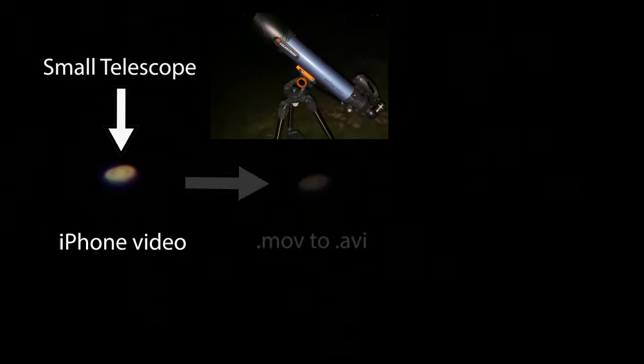Stay tuned after this video where I show you how to take awesome pictures of the planets using your cell phone. Hey everyone, John Reed here, author of 50 Things to See with a Telescope.